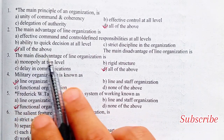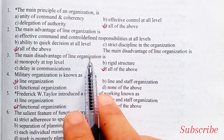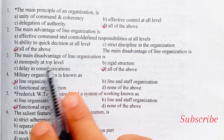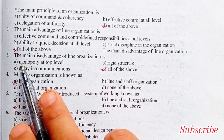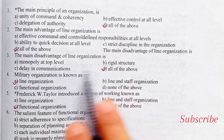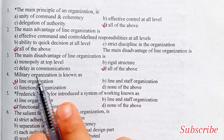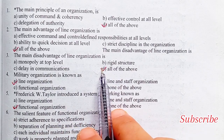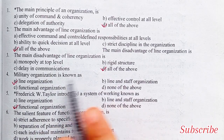The main disadvantages of line organization: monopoly at top level, rigid structure, delay in communications — all of the above.